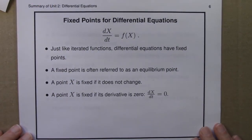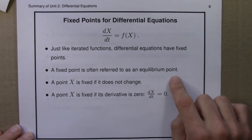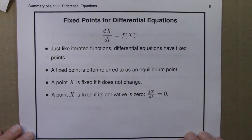Let me review some of the key terminology from this unit, and it's actually almost the same as the terminology from the previous one. So differential equations, just like iterated functions, have fixed points, and a fixed point is a point that doesn't change. In differential equations, one often calls a fixed point an equilibrium point, but it means the same thing.